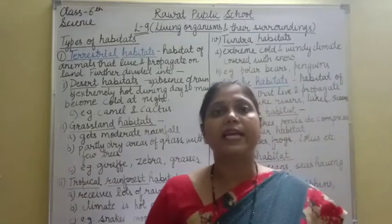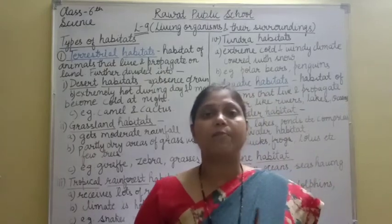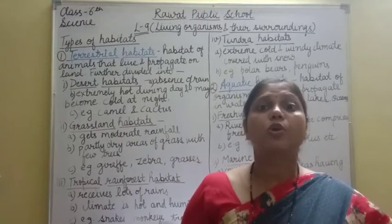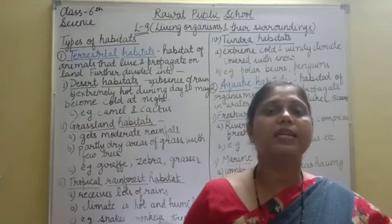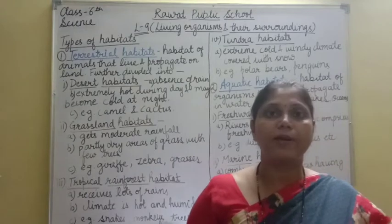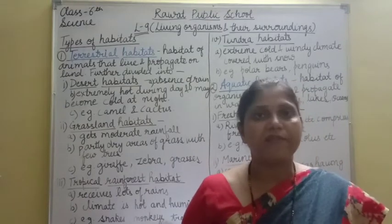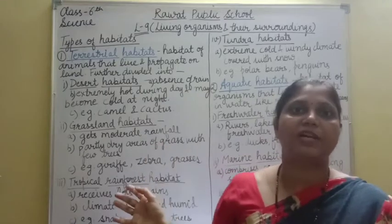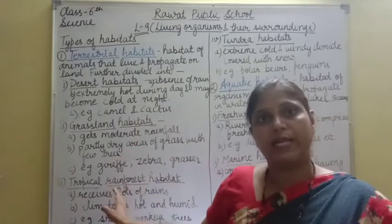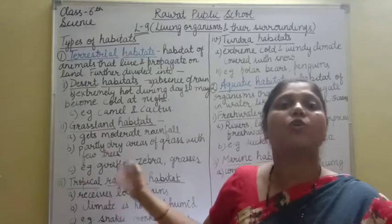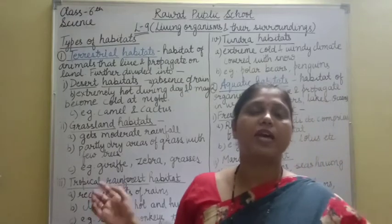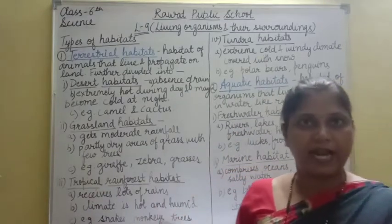इस chapter में हम adaptations के बारे में भी पढ़ेंगे. Adaptations means ये जो camel और cactus हैं, ये desert में survive करते हैं — तो क्यों? उनकी body में कुछ speciality होगी जिस वजह से वो इतने extreme harsh environment को survive कर पाते हैं. अभी हम habitat के बारे में पढ़ रहे हैं, later on हम adaptations के बारे में पढ़ेंगे.